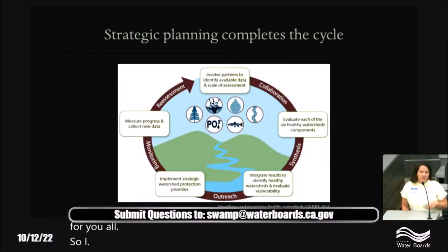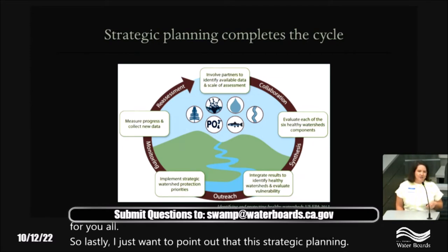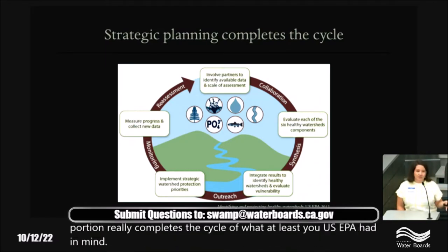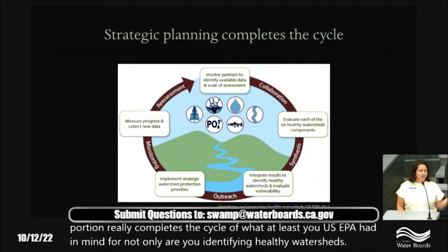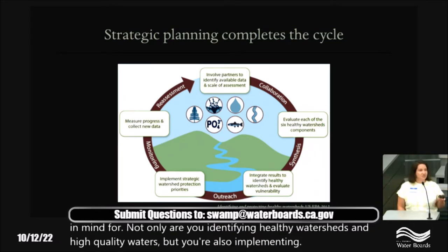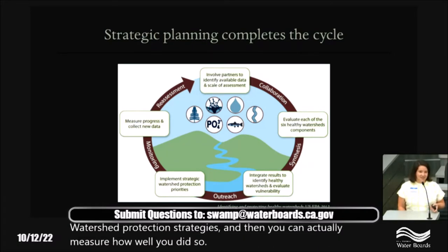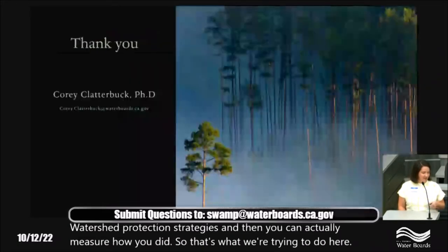The strategic planning portion really completes the cycle of what US EPA had in mind — not only identifying healthy watersheds and high quality waters, but also implementing watershed protection strategies and measuring how well you did. That's what we're trying to do here.